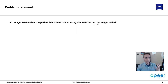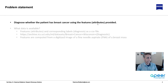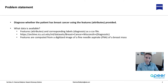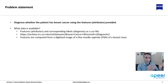The problem is to diagnose whether the patient has breast cancer using the features — or sometimes we call those attributes — that are provided. You can download the data from the link in the description. The features and corresponding labels are provided as a CSV file. If you followed my machine learning tutorials on image segmentation, for example, we took images and extracted features compiled into columns.